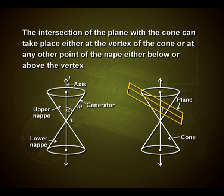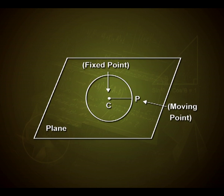The intersection of the plane with the cone can take place either at the vertex of the cone or at any other point of the nappe, either below or above the vertex. Here we shall discuss about circles under the conic sections.